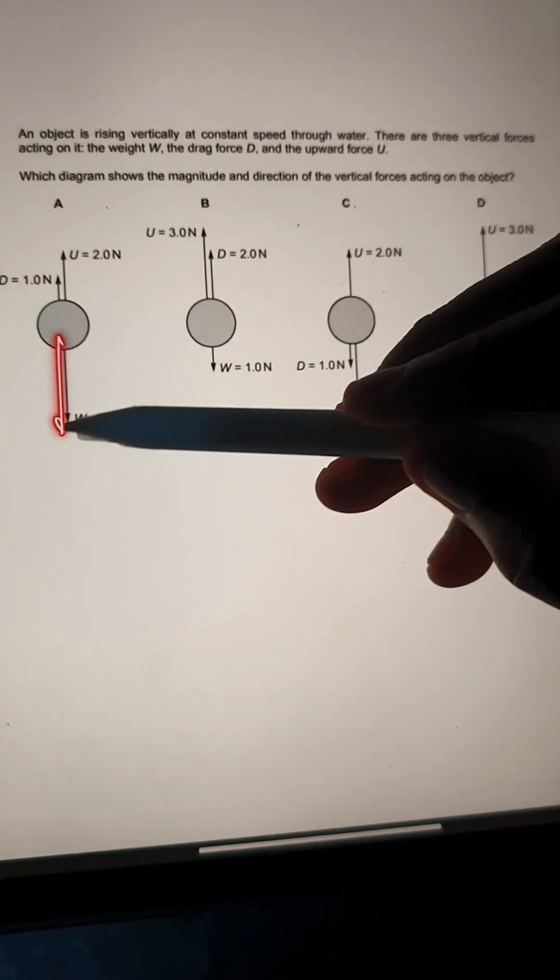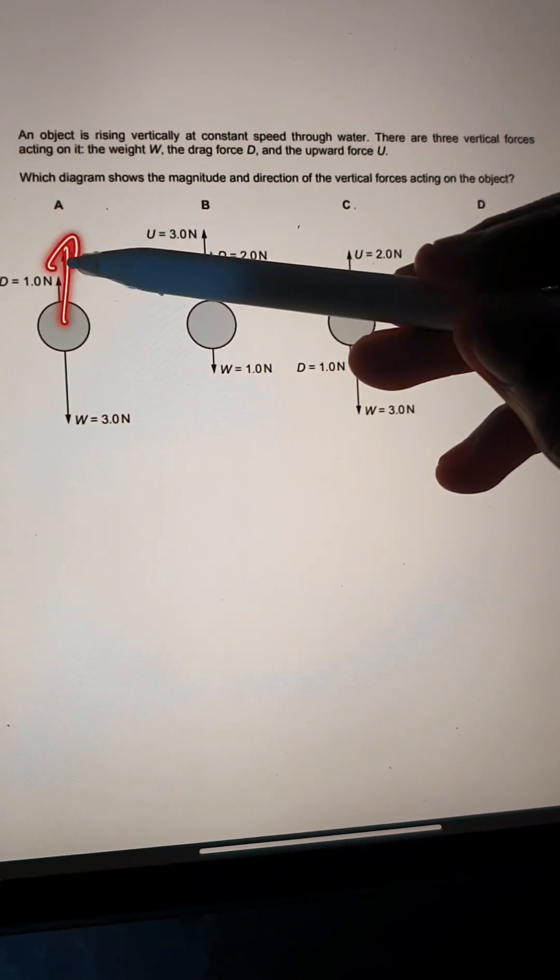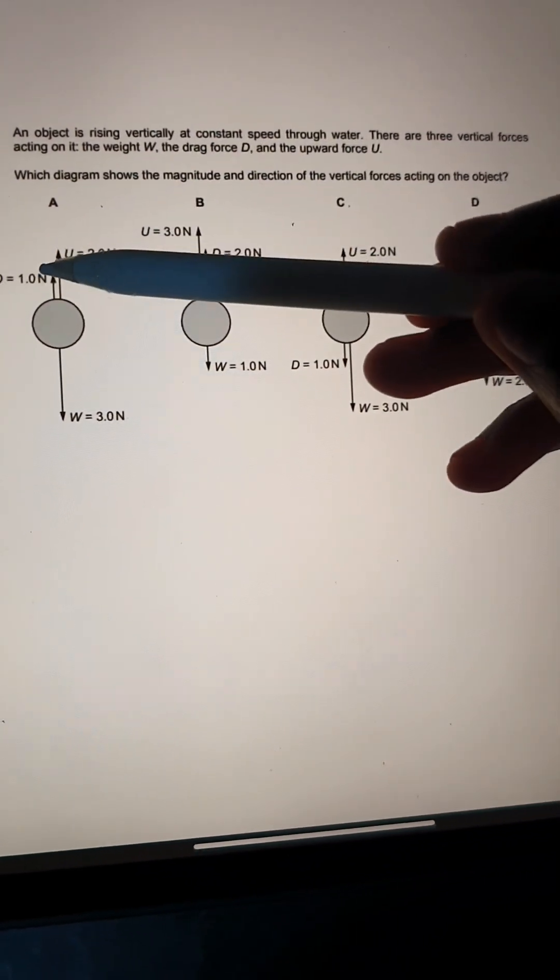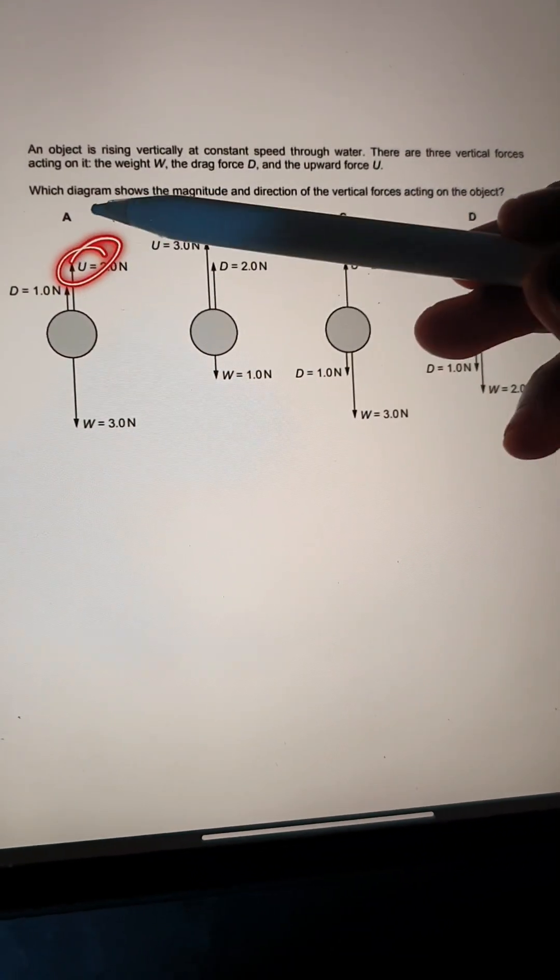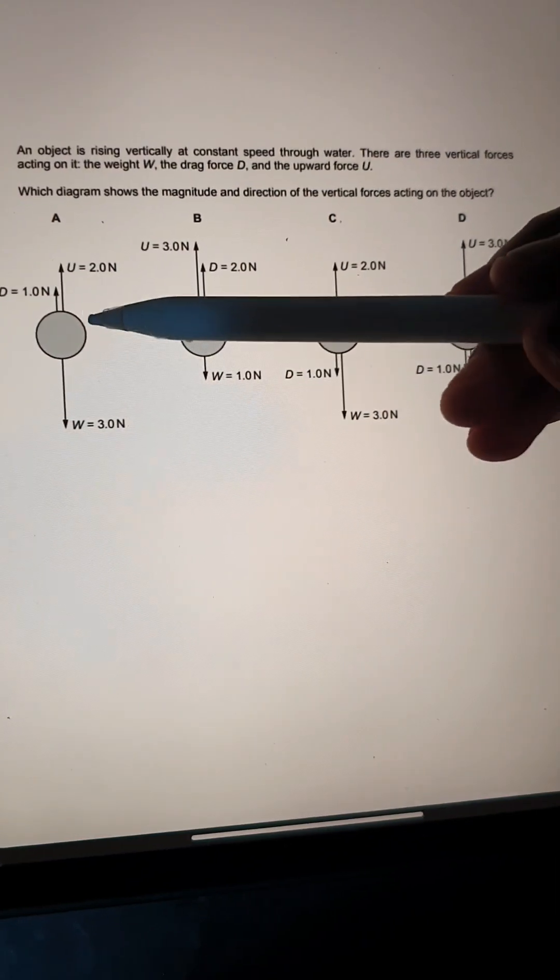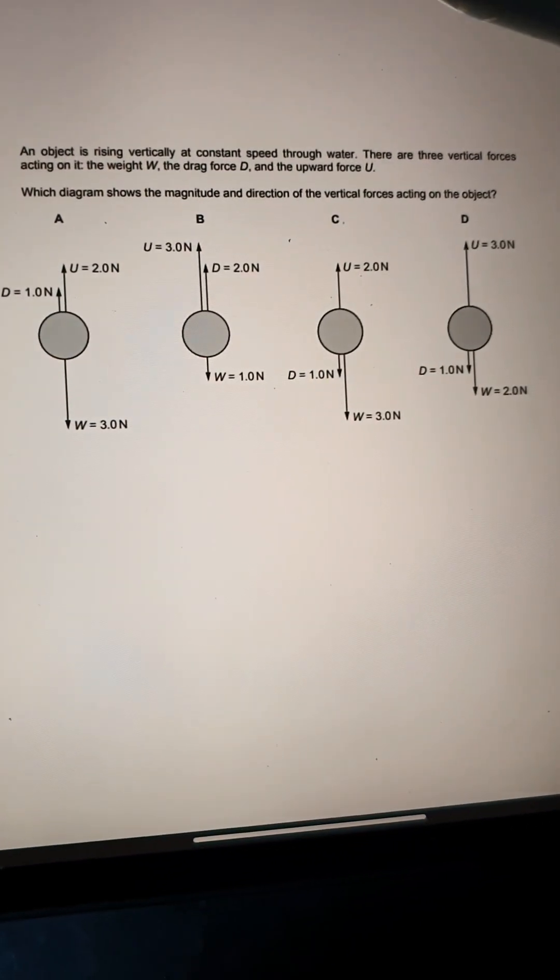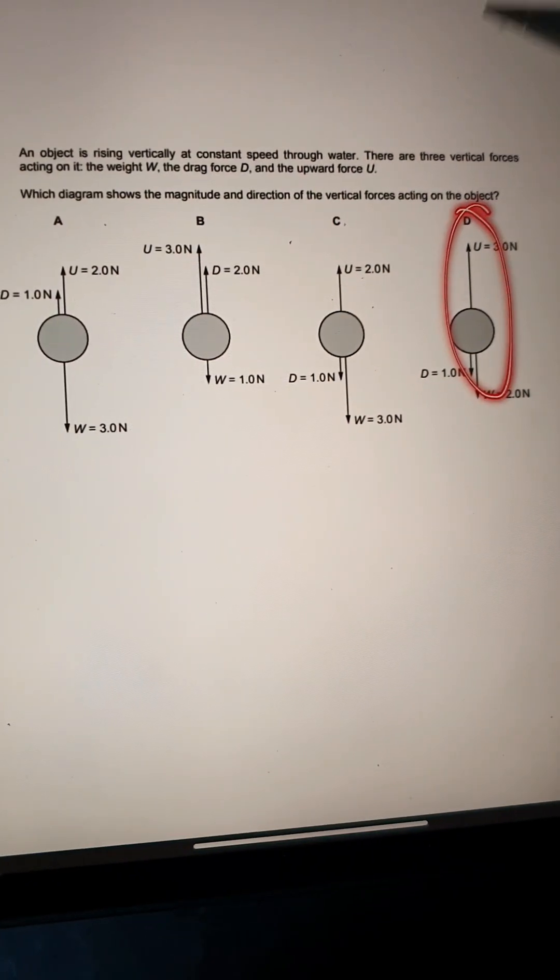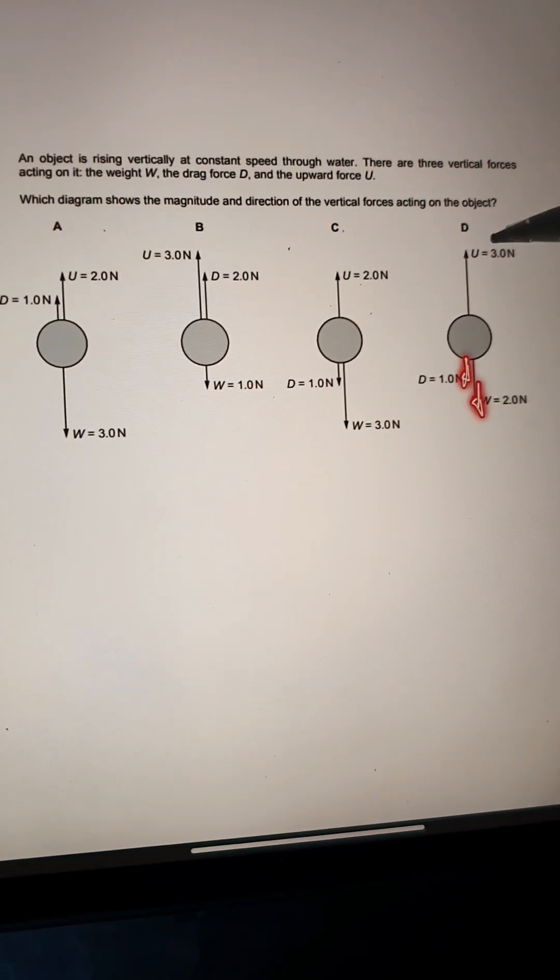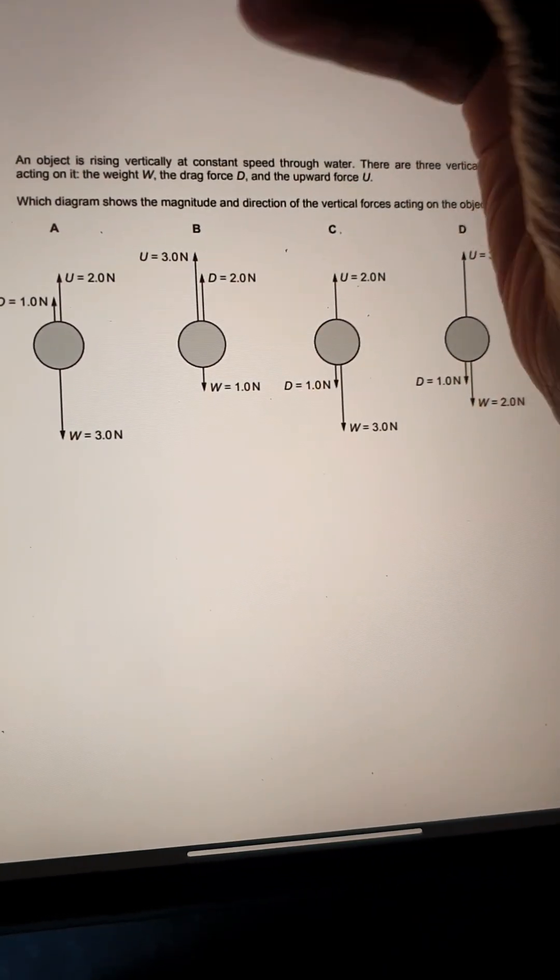That's because the weight force is going downwards but then the upward force of course goes upwards and the drag force has to go in the opposite direction as the upward force. Therefore, the drag force has to also go downwards and because of this, the answer is D because weight and drag go downwards and upward force of course goes upwards.